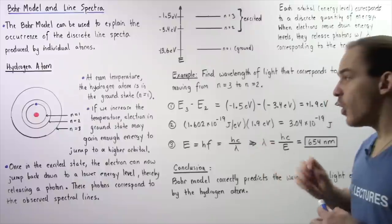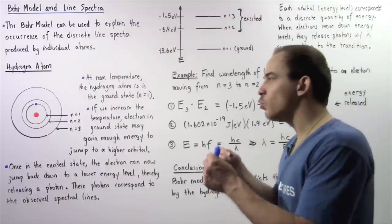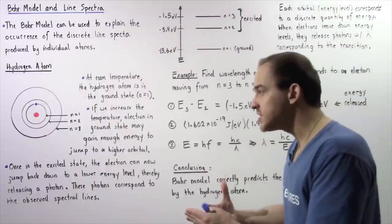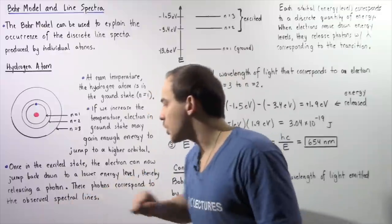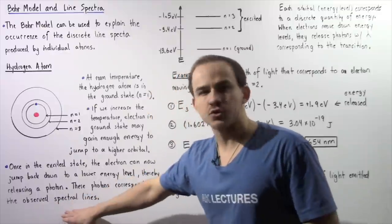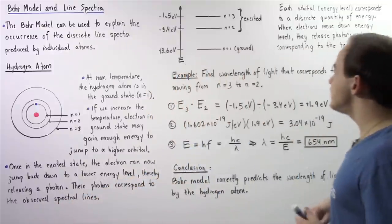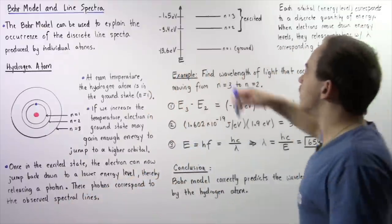These photons correspond to a particular wavelength and these photons produce the observed spectral lines. So let's examine the following diagram.